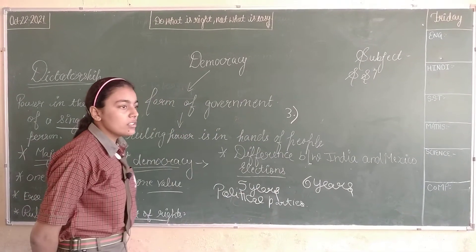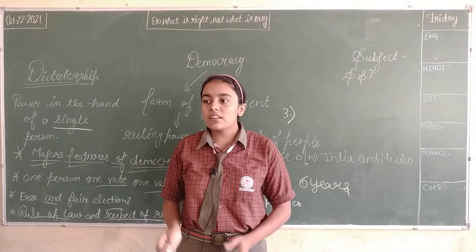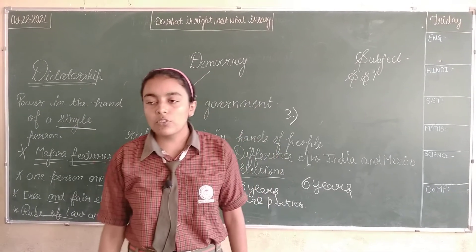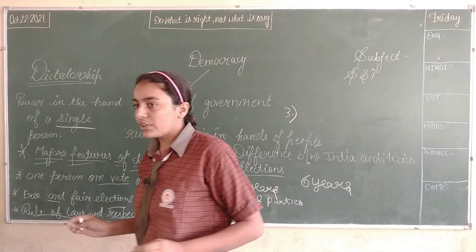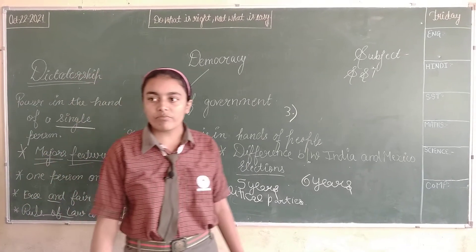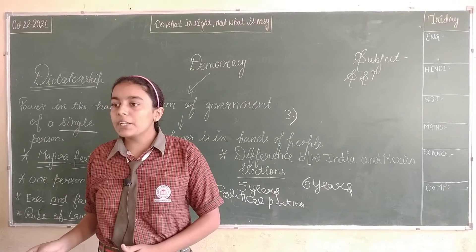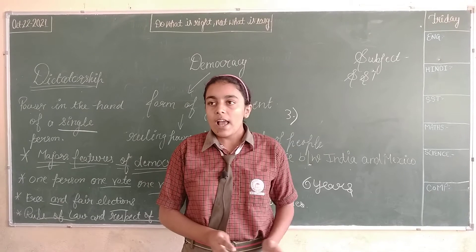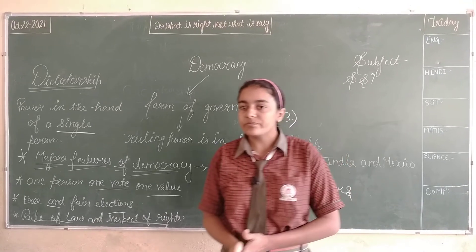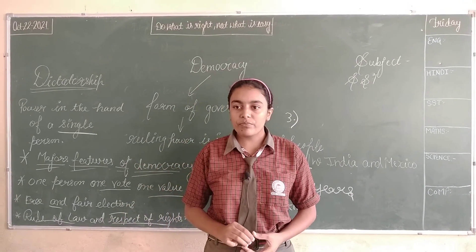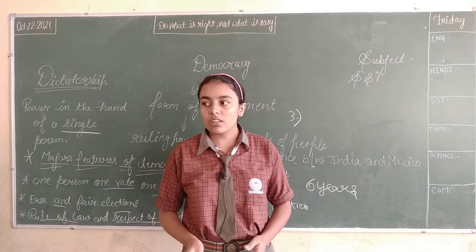There are three countries that cannot be called democratic: Estonia, Fiji, and South Africa. In South Africa, women do not have the right to vote. In Estonia, the majority of Russians find it difficult to get the right to vote. And in Fiji, Fijians have more voting value than Indo-Fijians.